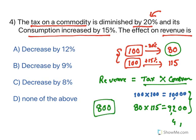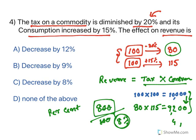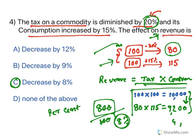So initially revenue was 10,000 and now it has become 9,200. The change is 800. Per cent means per 100 — so the percent change is 8%. From 10,000 it has become 9,200, so it has decreased by 8%. The effect on revenue is a decrease of 8%. Again, you don't need any complex logic or formula — the moment you see percentage questions, take 100 as the standard, plug in the changes, and calculate the difference.